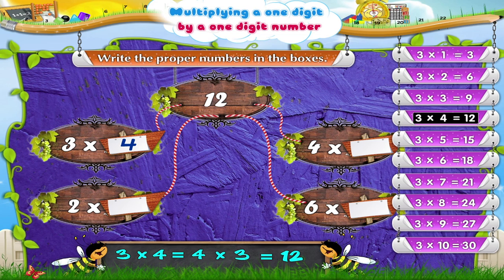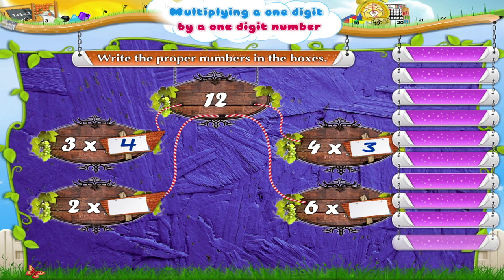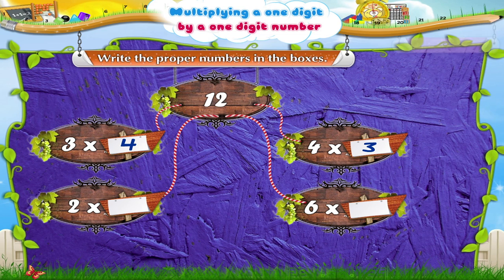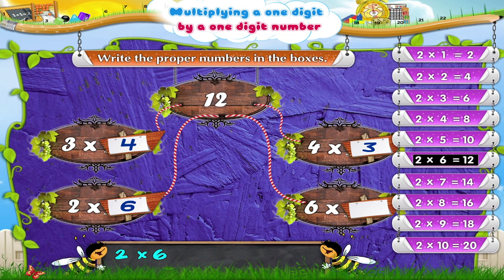Hence, it follows that the number in the second box will be 3. We next say the two times table till we reach 12. Two sixes are 12. The number in the next box is 6. But 2 times 6 equals 6 times 2 is equal to 12. And so the number in the last box has to be 2.